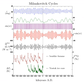Apsidal precession occurs in the plane of the ecliptic and alters the orientation of the Earth's orbit relative to the ecliptic. This happens primarily as a result of interactions with Jupiter and Saturn.